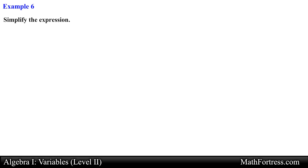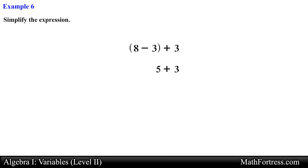Now let's work on simplifying numerical expressions. Simplify the expression: the quantity (8 minus 3) plus 3. The expression in the parentheses is simplified first. So 8 minus 3 is equal to 5, and we add 3 to the result, which simplifies to 8.